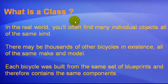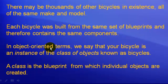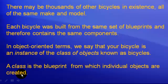What is a class? In the real world, we often find many individual objects all of the same kind. For example, there may be thousands of bicycles in existence, all of the same make and model. Each bicycle was built from the same set of blueprints and therefore contains the same components. In object-oriented terms, we say that bicycle is an instance of the class of objects known as bicycles. A class is the blueprint from which individual objects are created.